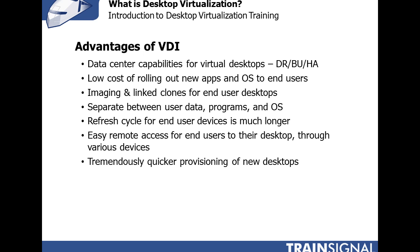You get to separate user data, programs, and the operating system. The refresh cycle for end user devices can now be much longer — if they're using thin clients or old PCs, they can keep those old PCs and just run the desktop virtualization client to connect to the VDI infrastructure. They can keep the same old PC and run Windows 7, Windows 8, and all the latest applications because all that is now running in the data center. Thin client devices also don't break as often because they have no moving parts. You'll get easier remote access through various devices — no more slow VPN access — and VDI provides consistent access to the same desktop no matter where the end user is.